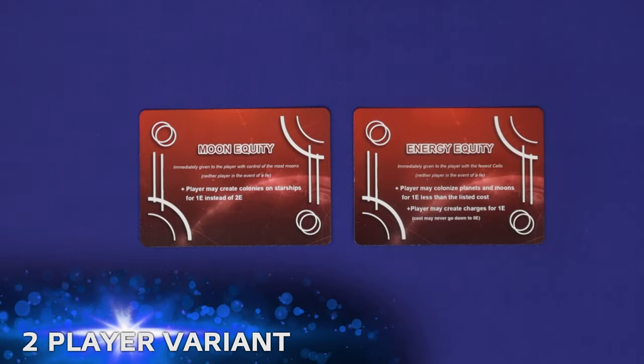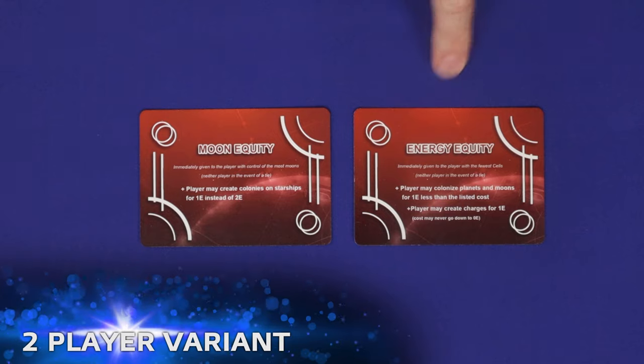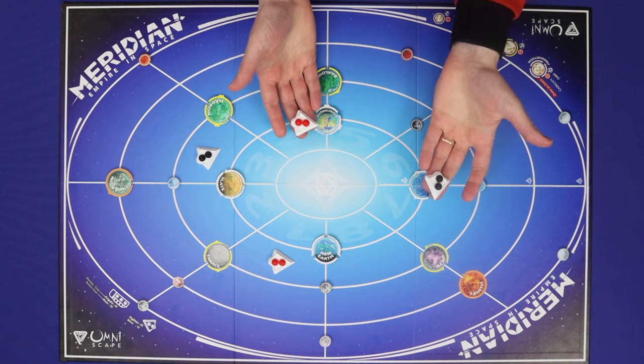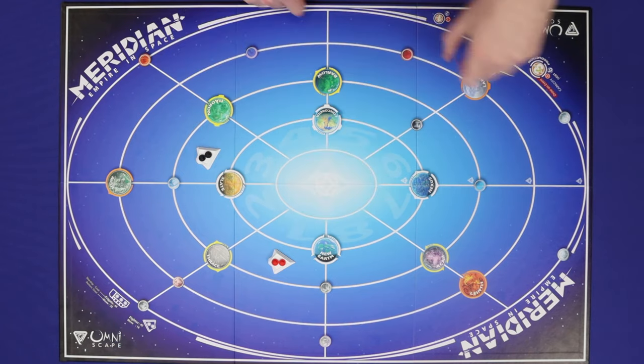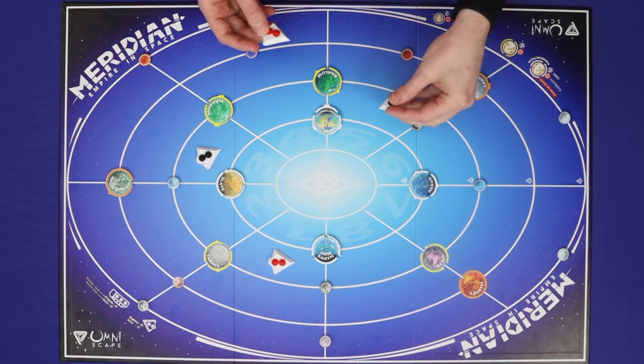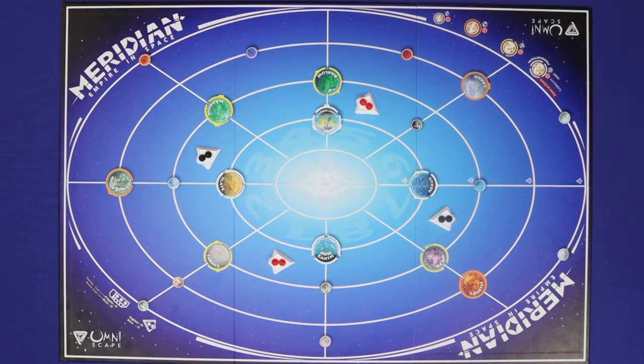There are a few small changes to the rules to allow Meridian to be played at two players. You will not use the moon equity or energy equity at this player count. Each player will begin the game with two fighters instead of one. You'll place your first fighters in the normal way, and then place your second fighters in the directly opposite quadrants to where your first is sitting.